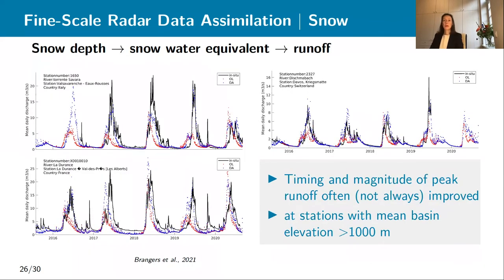From snow depth, the model allows us to estimate snow water equivalent — the amount of water in the snow — and then by routing it through the rivers, we get estimates of runoff. Here you see three sites with runoff data, one in Italy, one in France, and one in Switzerland. The black data are the in-situ data, the red dots are the open loop model only, and the blue ones are the data assimilation results. You can see how assimilating Sentinel-1 snow depth retrievals ultimately helps to get the runoff, improved both in total amounts of discharge and in the timing of the peak. Most of the improvements are found at stations where the main basin elevation is above 1,000 meter.